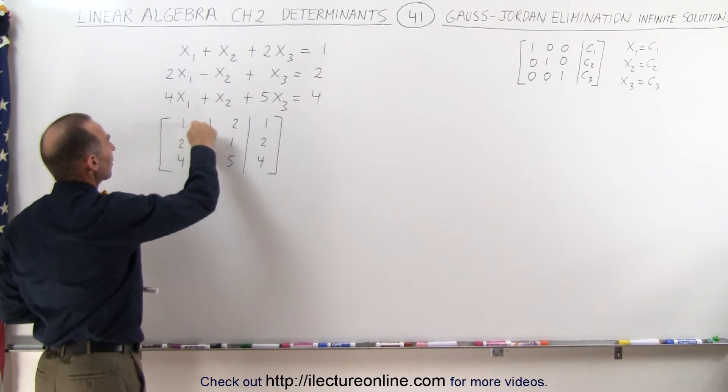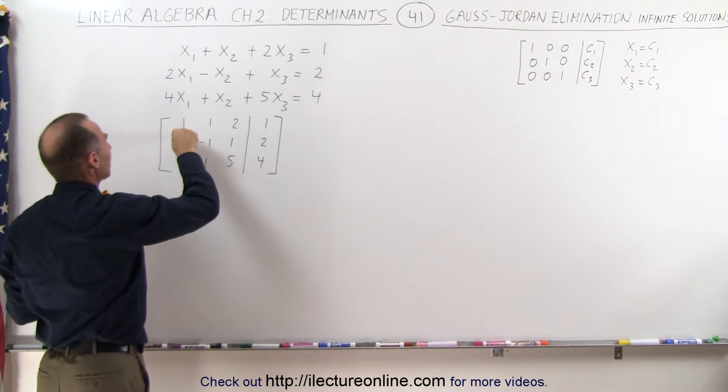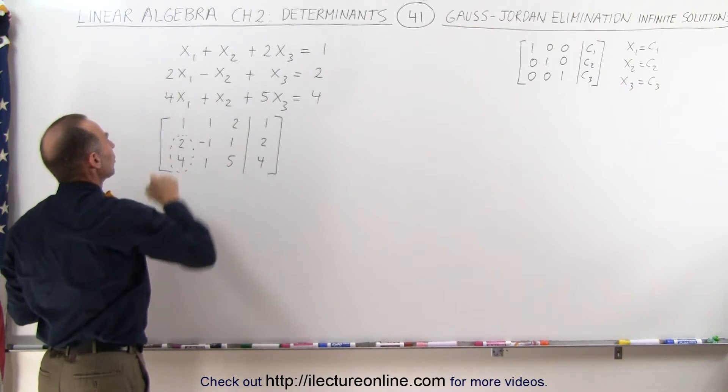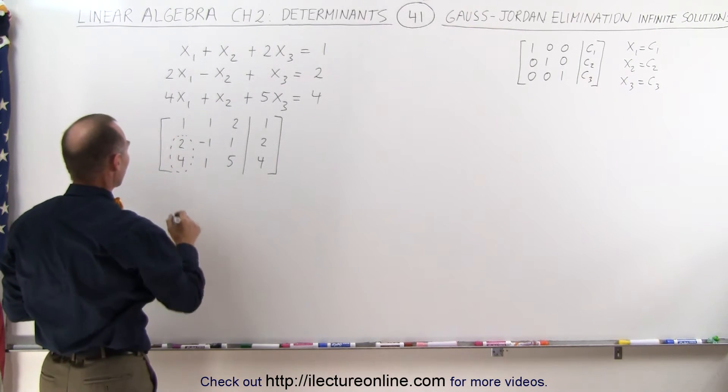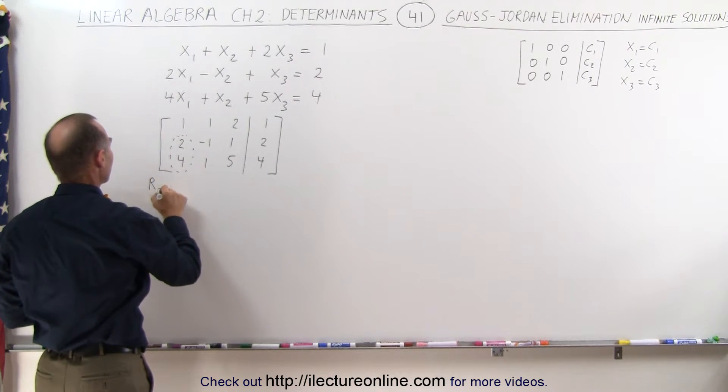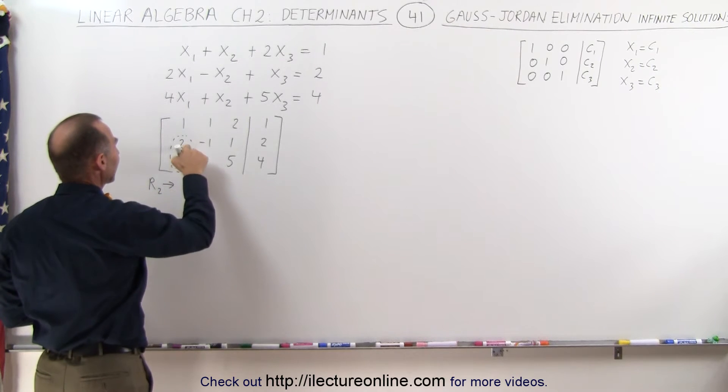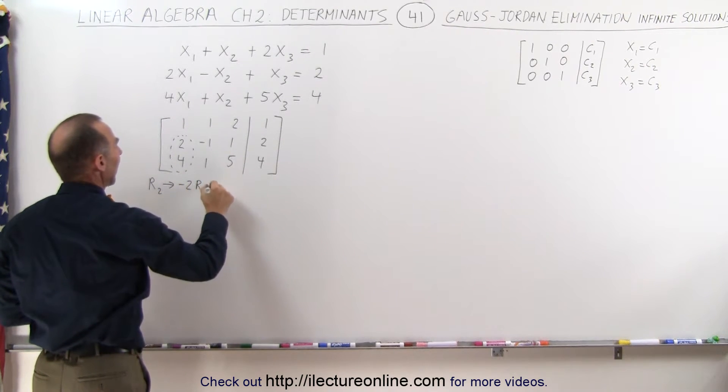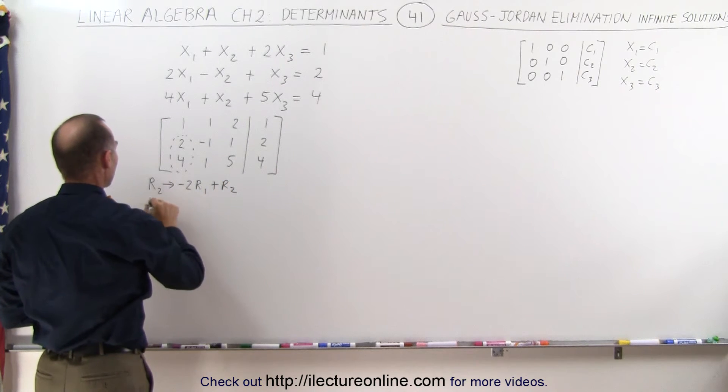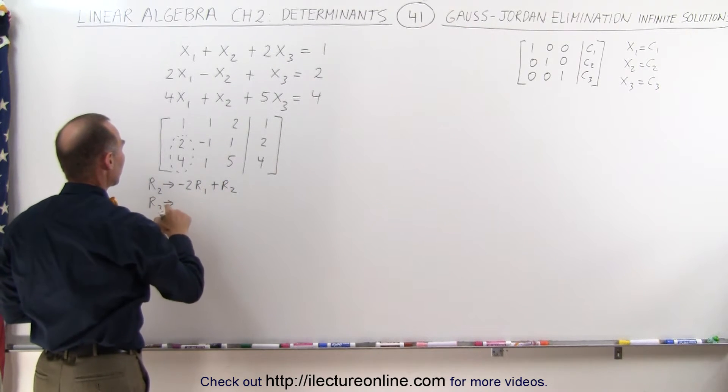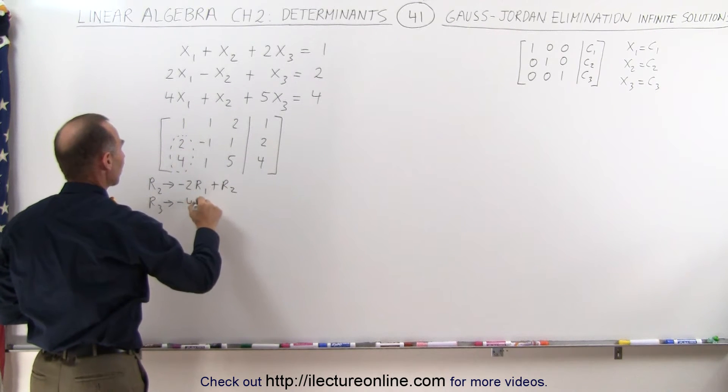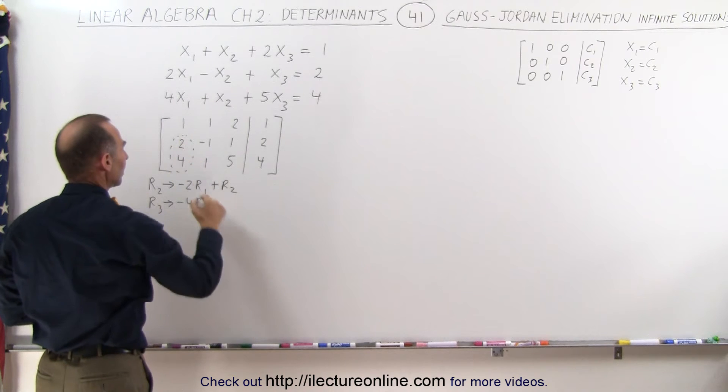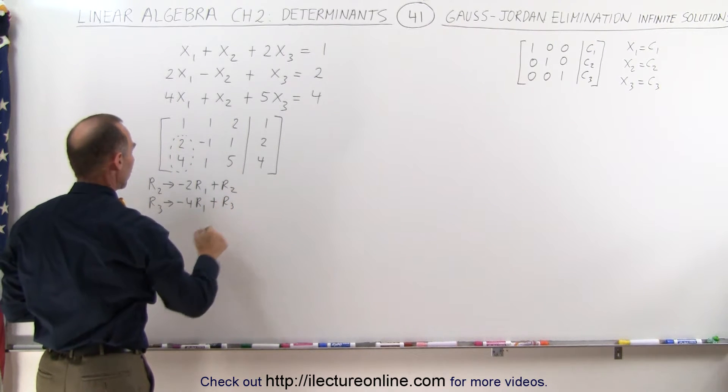Since we have a 1 here in the upper left corner, we're going to try and eliminate these two numbers right here, those two elements. We can do that by taking the second row and replacing it by the negative of this number, multiplied times the row with the 1 in it, and adding it to the second row. And we take the third row and replace it with the negative of this number, multiplied times the first row, the one with the 1 in it, and adding it to the third row.